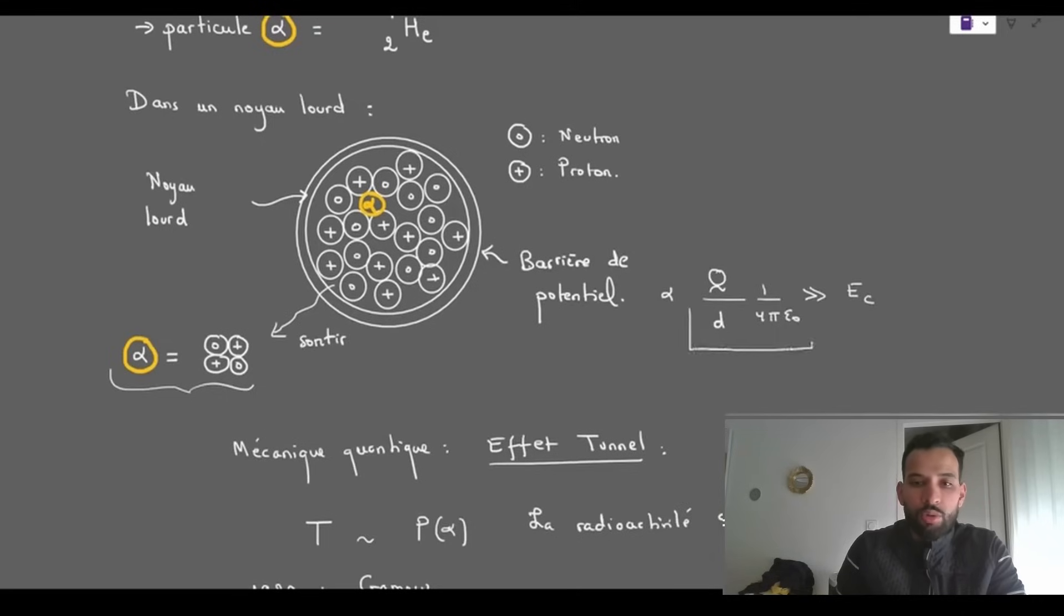This potential barrier is equivalent to the charge of the protons inside divided by the distance times a Coulomb factor. This potential barrier is higher than the kinetic energy of the alpha particle, which would classically prevent any exit.